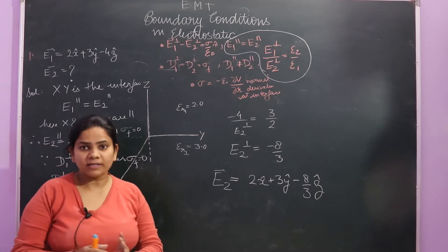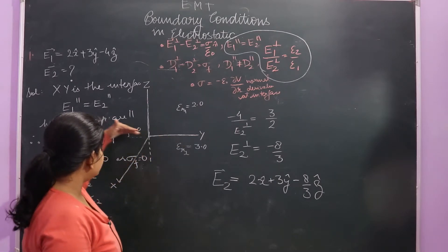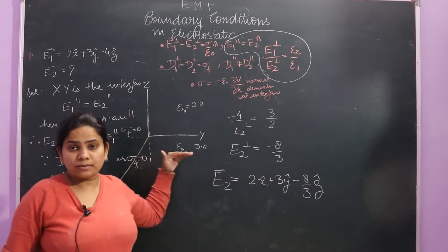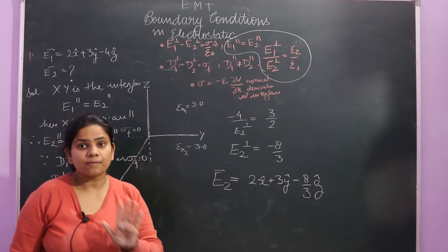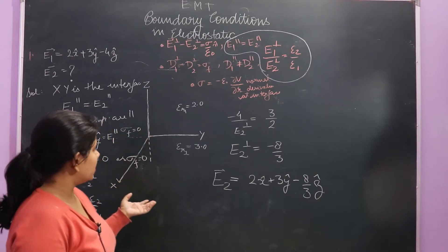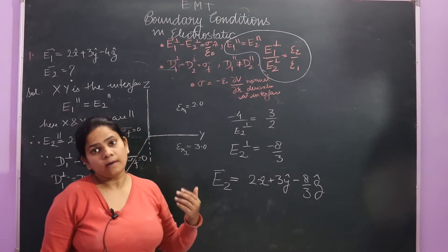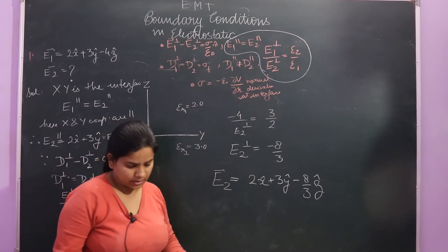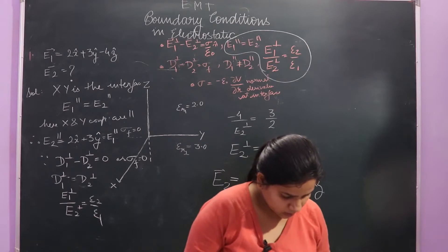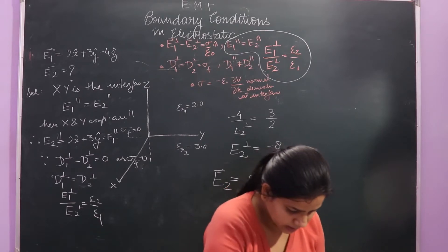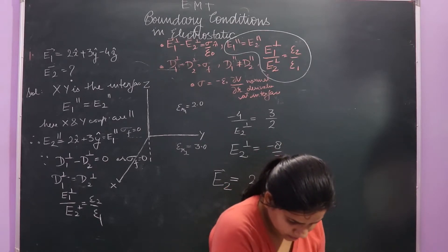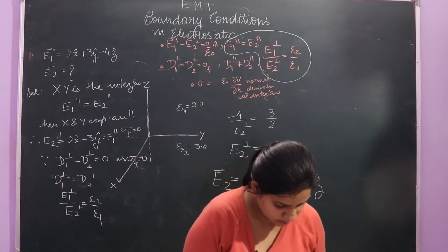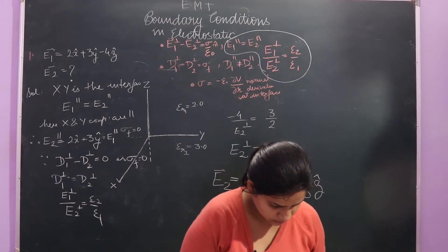So this is your E2. Note that the interface is the X-Y sheet — the x-y components (parallel) are equal in both regions. For the perpendicular component you use the relation E1⊥/E2⊥ = ε_r2/ε_r1. Now let's do one more question from this part.